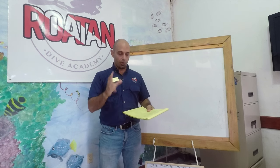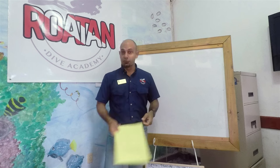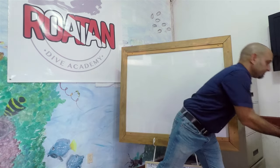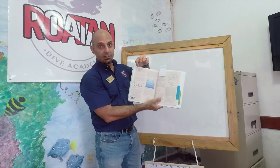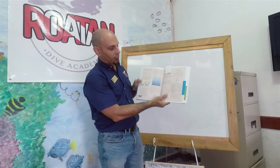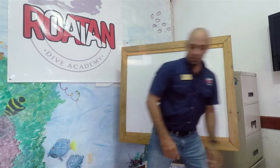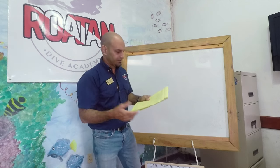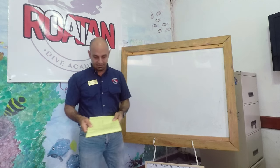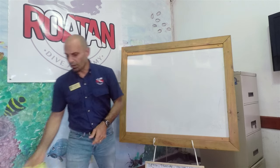Today we're talking about how volume changes according to the change of pressure. I'll open the Encyclopedia of Recreational Diving at page 426, where we have Boyle's Law — everything I'm going to cover, including calculations and formulas, is on pages 426 and 427. Boyle's Law states: the volume of a gas is inversely proportional to the absolute pressure, and density is directly proportional to absolute pressure.